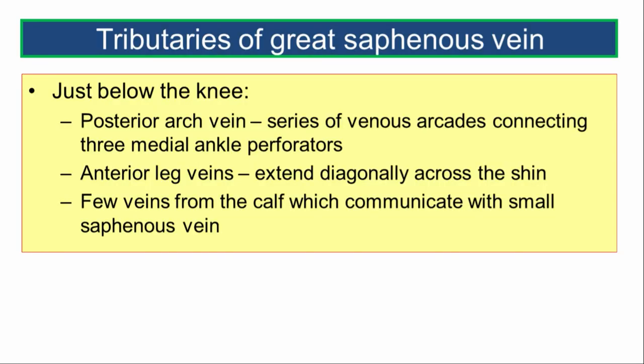Tributaries of the great saphenous vein: Just below the knee is the posterior arch vein, seen as a series of venous arcades connecting the three medial ankle perforators and draining into the great saphenous vein. Next are the anterior leg veins, which extend diagonally across the shin and drain into the great saphenous vein, plus a few veins from the calf which may communicate with the small saphenous vein.